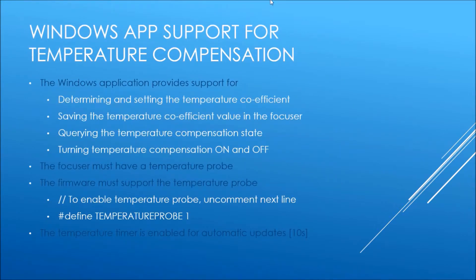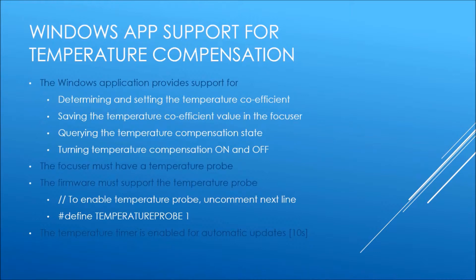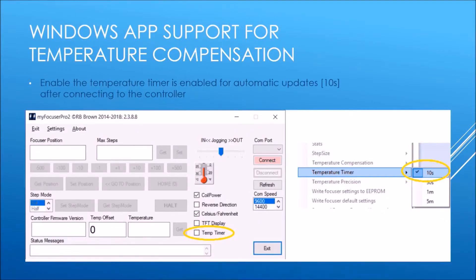In the Windows app, we have a means of determining the temperature coefficient value — the change in steps required for each degree. We can save that value in the focuser and it is remembered. We can query the temperature compensation state — whether it is on or off — and turn it on and off. However, we must have a temperature probe, and the firmware must support it by ensuring the correct define statement is enabled. The temperature timer is enabled for automatic updates at 10-second intervals.